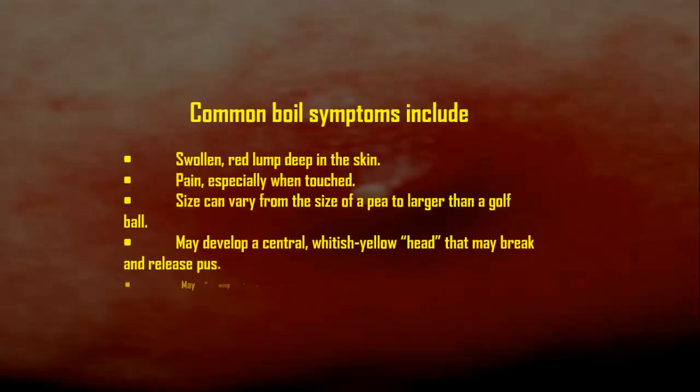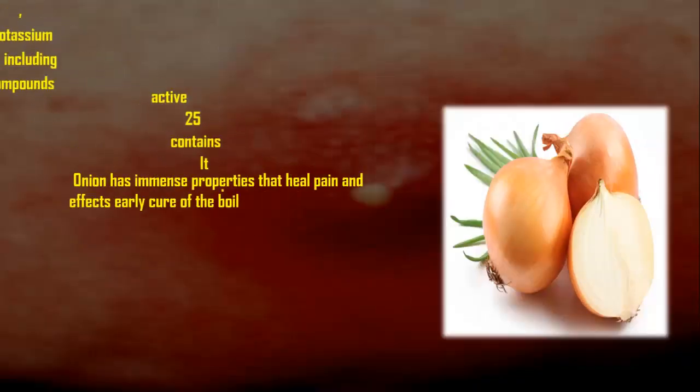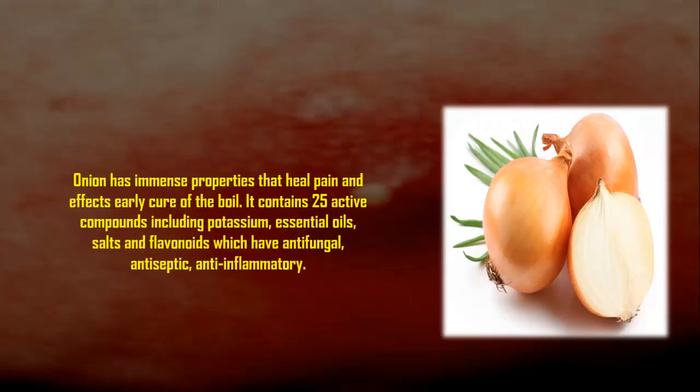Common boil symptoms include a swollen red lump deep in the skin, pain especially when touched, and size can vary from the size of a pea to larger than a golf ball. It may develop a central whitish-yellow head that may break and release pus, or ooze clear fluid, or develop a crust.